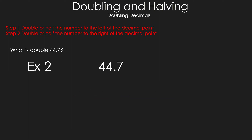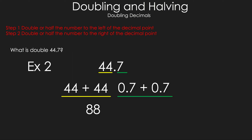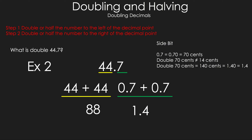Example 2 follows the same steps. Separate the number, then double 44 to get 88. Now double 7 tenths: 7 tenths equals 70 cents, and doubling 70 cents gives 140 cents — not 14 cents — which equals 1.40, or 1.4. Combining 88 and 1.4 gives the answer 89.4.